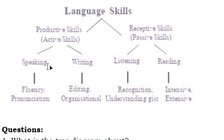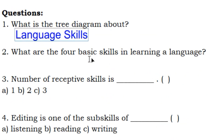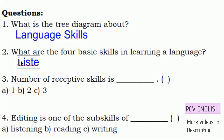L-S-R-W: Listening, Speaking, Reading, Writing. What is the first thing to learn? That is L-S-R-W. Listening comes first, according to the order, followed by speaking.